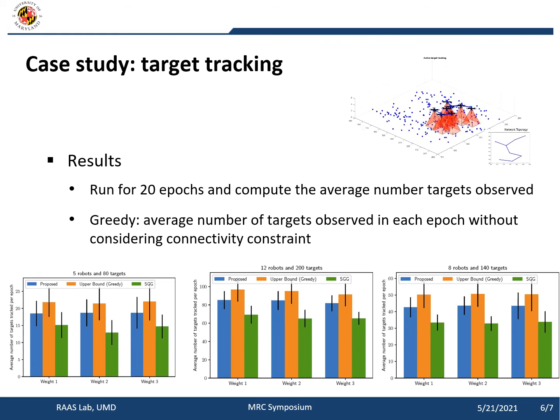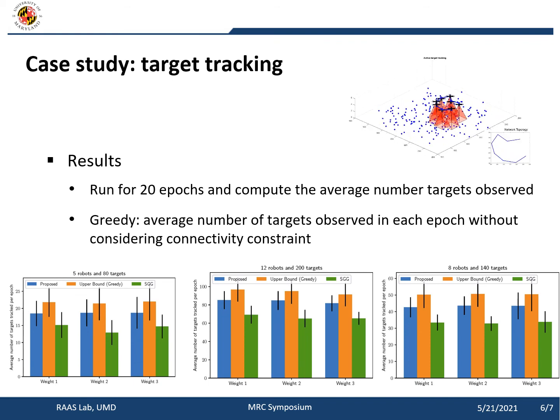We test our algorithm in the active target tracking application. We run the algorithm for 20 epochs and computed the average number of targets observed. The result shows that our algorithm is in general better than the naive sequential gradient algorithm, which is the baseline, and very close to the upper bound of team performance. During the whole task process, the team remains connected.